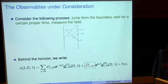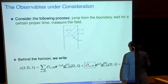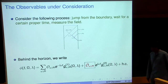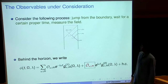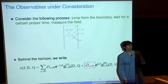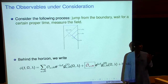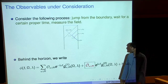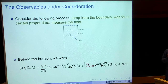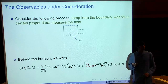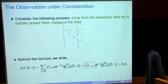The observables we're interested in are classically or semi-classically well-defined gauge invariant observables in the bulk. The physical process we're thinking about is: you start from some point on the boundary given by time and position on the sphere, you jump in carrying a clock or measurement device, wait for a certain proper time, then measure the field or some local excitation. This is a non-local observable framed to the boundary, but it's the closest approximation to local bulk observables we can get semi-classically.